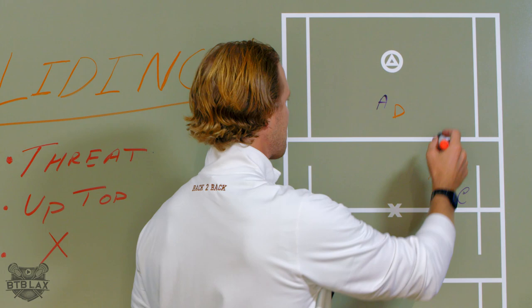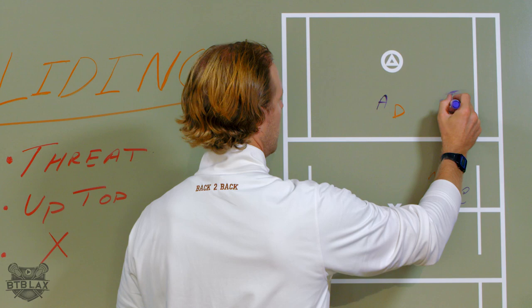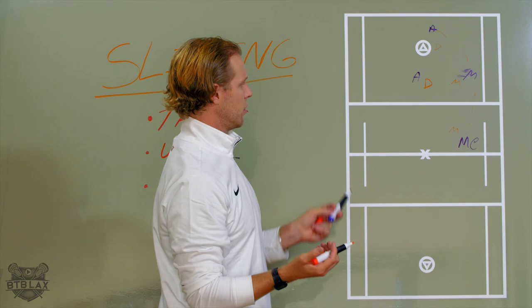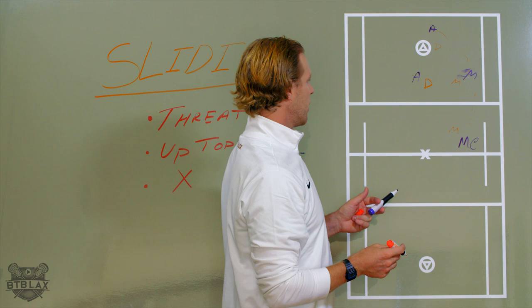Let me draw it out a little bit more here. You have a middie over here, middie over here, attackman, defenseman, middie. He doesn't slide — pass, pass — we're still playing six on six. There's no rotation. So that's what it looks like from up top if you don't have to slide.